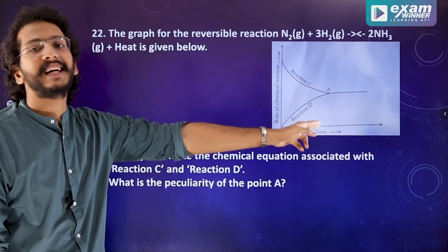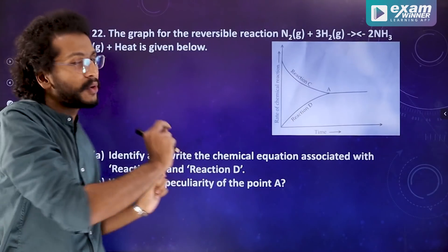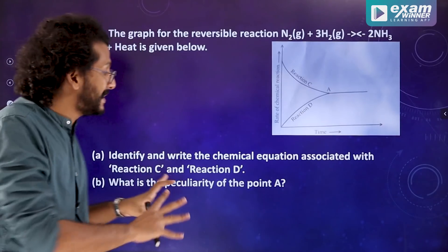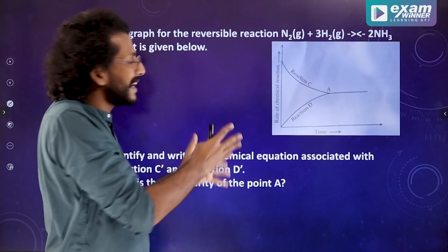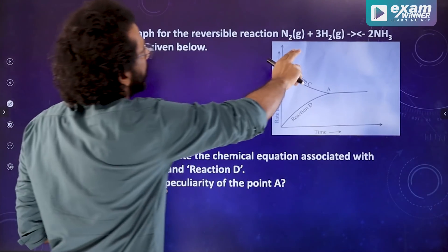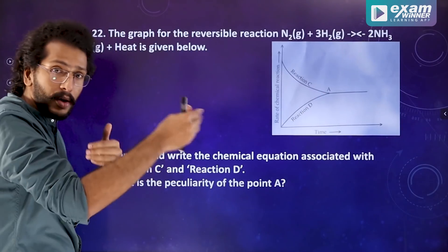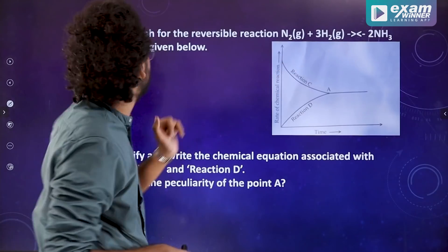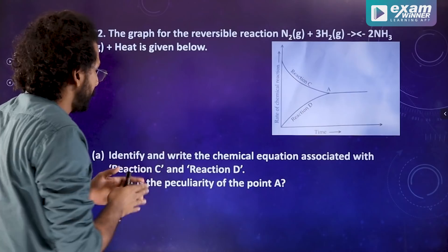We will explain this graph. The graph shows a reversible reaction: N2 plus 3H2 gives 2NH3 plus heat. The forward reaction and backward reaction proceed until equilibrium is reached.